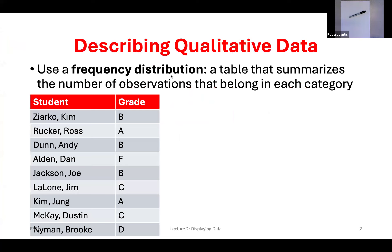The first thing we're going to talk about is building what we call a frequency distribution. We've got a small sample data set of nine different students with their letter grades. This is not a numerical value, so it's definitely not quantitative data — it's a recorded characteristic, just a letter, so we say it's qualitative data.